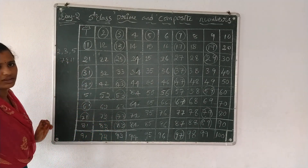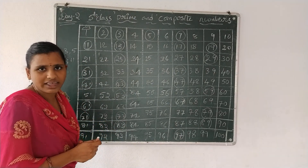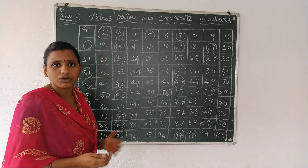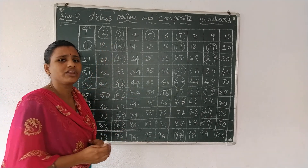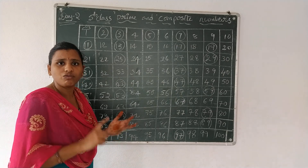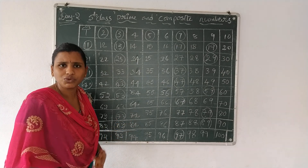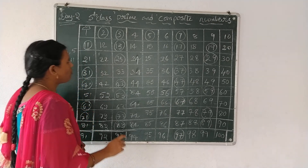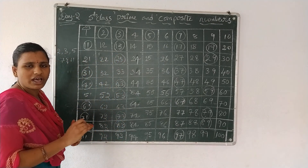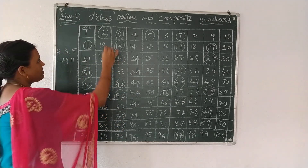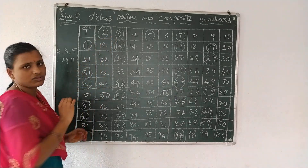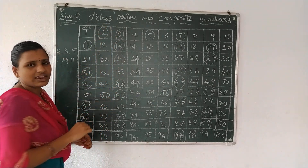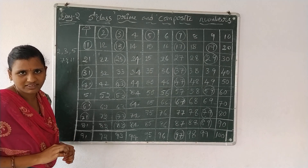Let's see the 2 table. 2 times 1 is 2. How many factors are there in 2? Just 1 and 2. Since 2 has only 2 factors, that is a prime number. So circle prime numbers.